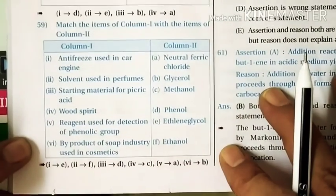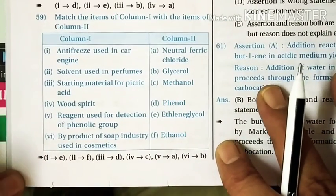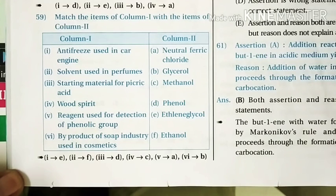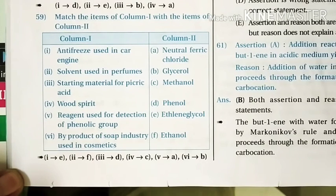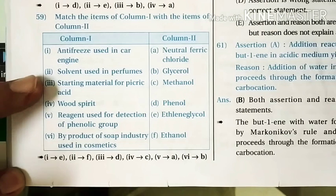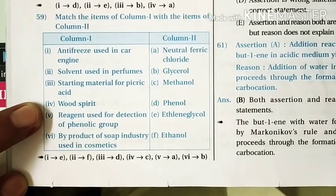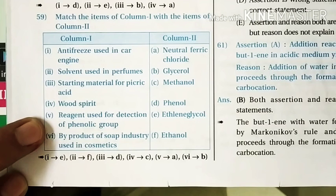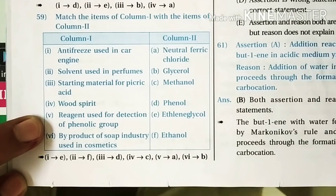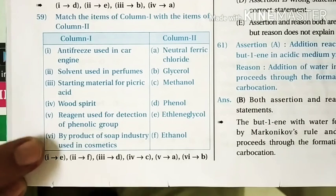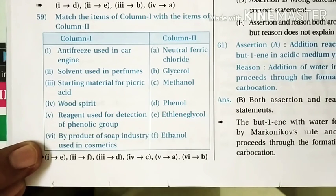Question 59: Match the following. Antifreeze used in car engines — ethylene glycol. Starting material for picric acid — phenol. Wood spirit — methanol. Reagent used for detection of phenolic group — neutral FeCl3, which gives a yellow coloration with any phenolic group. By-product of soap industries used in cosmetics — glycerol.